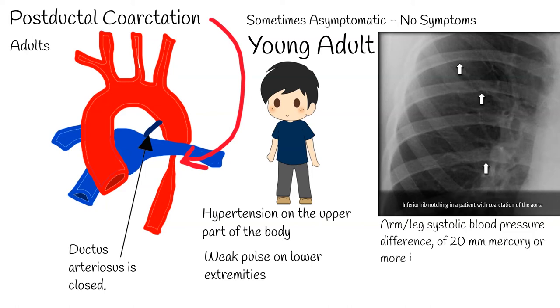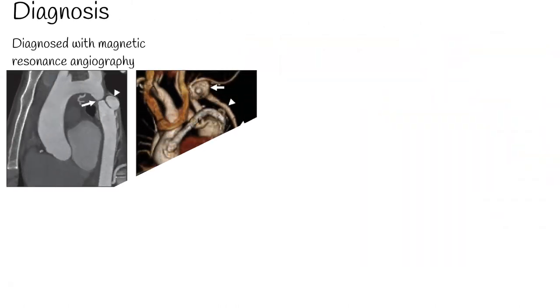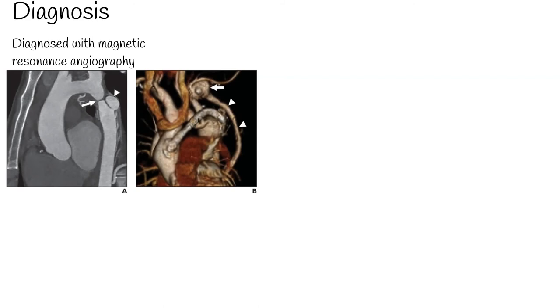An arm-to-leg systolic blood pressure difference of 20 mmHg or more in favor of the arms may be considered as evidence for aortic coarctation. Coarctation of the aorta can be accurately diagnosed with magnetic resonance angiography. In teenagers and adults, echocardiograms may not be conclusive.